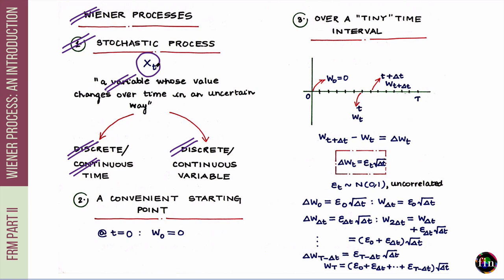When it comes to Wiener processes, I'll denote them as W subscript t, and they fall in the category of continuous variable continuous time. Let's now build our analysis of the Wiener process in as introductory a way as possible, and in the end arrive at the properties of this Wiener process. The only background knowledge you need is the set of properties of the normal distribution.